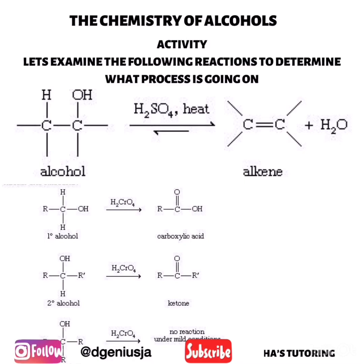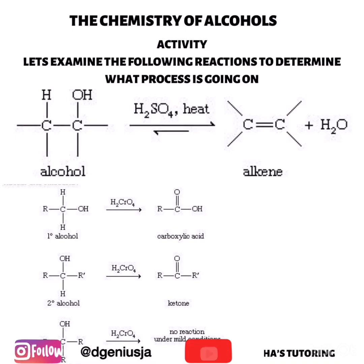Looking at the second reaction, we see three types of alcohol — a primary alcohol, a secondary alcohol, and a tertiary alcohol — being transformed to their corresponding products. This is oxidation. The primary alcohol is being oxidized to a carboxylic acid, the secondary alcohol is being oxidized to a ketone, and the tertiary alcohol is not changed — it does not undergo oxidation.